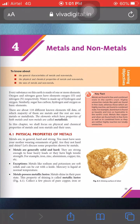Now we talk about the physical properties of metals. The first property is that metals are generally solid and hard. They are strong enough to bear heavy loads and have high tensile strength. Examples include iron, zinc, aluminium, copper, and tin.